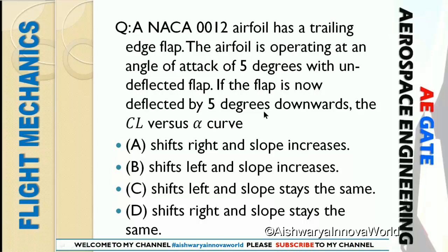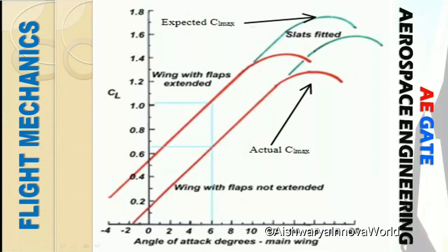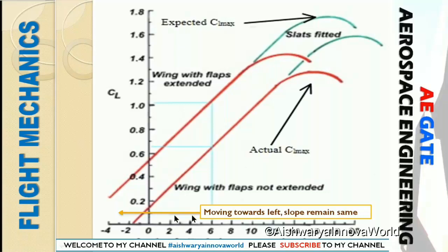Let us see the CL versus alpha curve. First, let me explain what a flap is — flap is a high-lifting device used to increase the lift of an aircraft wing at a given airspeed. In the CL curve, the first line is when the flap is not extended. When the flap is extended, the slope remains the same but it moves towards the left — the slope remains same.